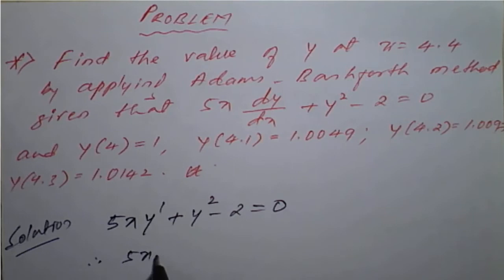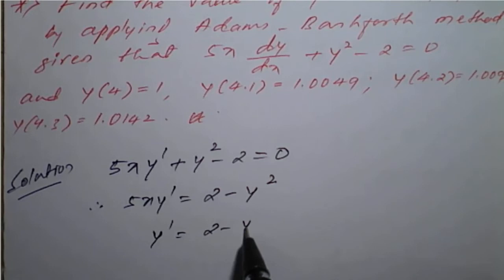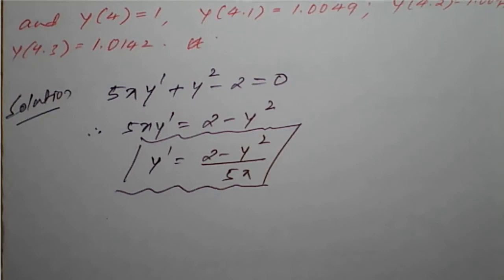Therefore, it will become 5x y dash equal to 2 minus y squared. Or, we can write this as y dash equal to (2 minus y squared) divided by 5x. This is the differential equation we use to find values of y dash with respect to given values of x and y.